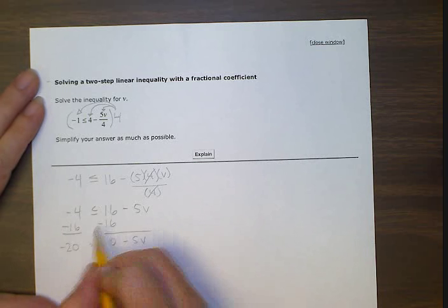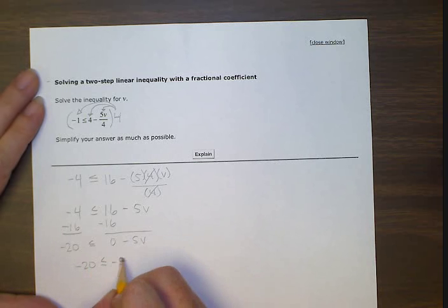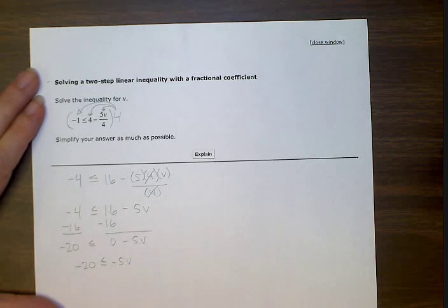So now we have negative 20 is less than or equal to negative five v. Now, in front of that v, we have a negative five. So we need to do the opposite to get rid of it. So it's being multiplied by negative five, so we want to divide by negative five.